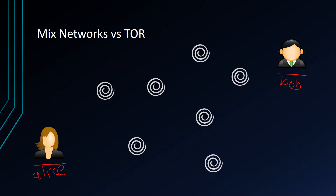In TOR, Alice chooses a certain path or sequence of nodes to connect to Bob. For example, she can choose one node, followed by another, followed by another before going to Bob. Each node only knows the existence of the nodes directly adjacent to it — it doesn't know that the original message was from Alice, and it doesn't know that the intended recipient is Bob.